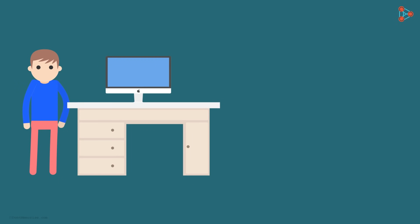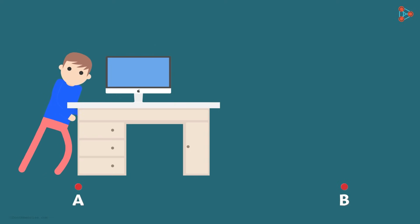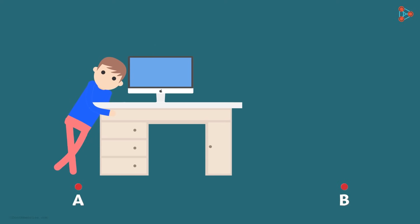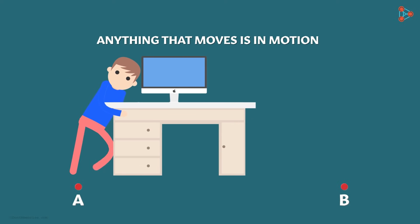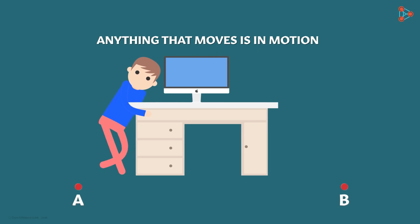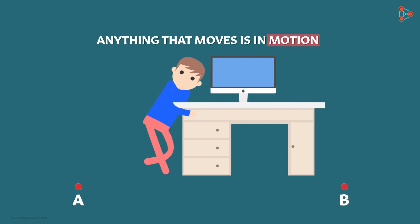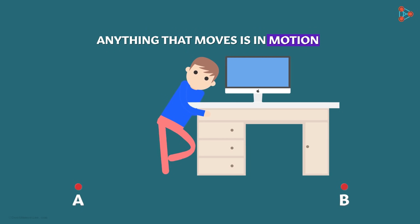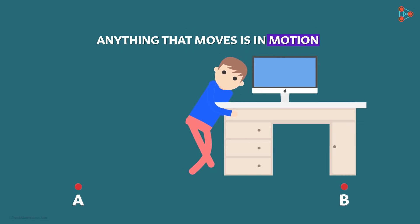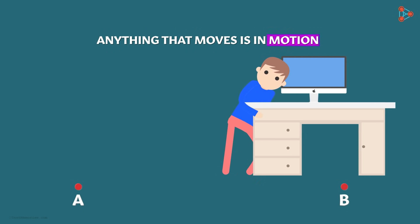Ben wants to move this table from point A to point B. What will he do? He will push it in the direction of point B. You see that as he pushes the table, it starts moving. Anything around us that moves, we say that it's in motion. So this table is in motion, and since Ben is also moving along with the table, he is also in motion.